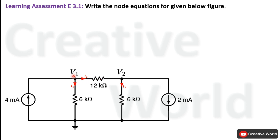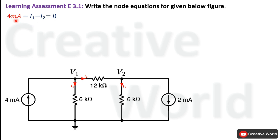First of all we will start at the first node. On this node only one current is entering while two currents are leaving. So the KCL equation for this node takes entering current with a positive sign while leaving currents are taken with a negative sign.